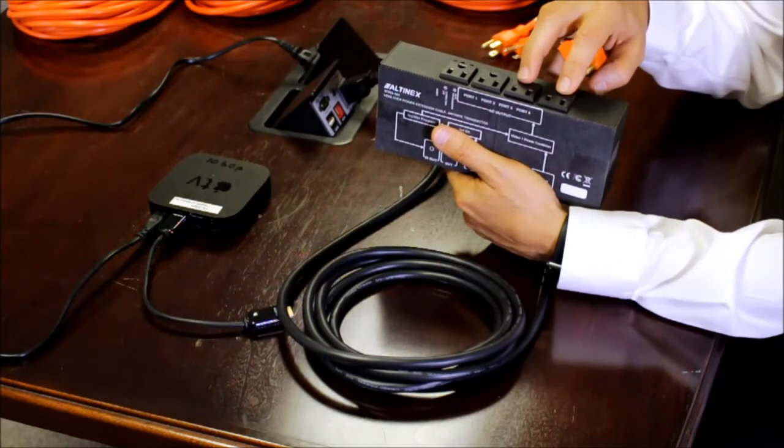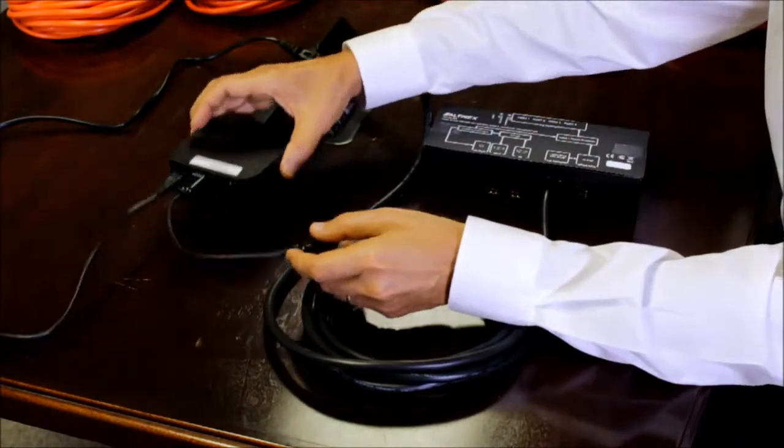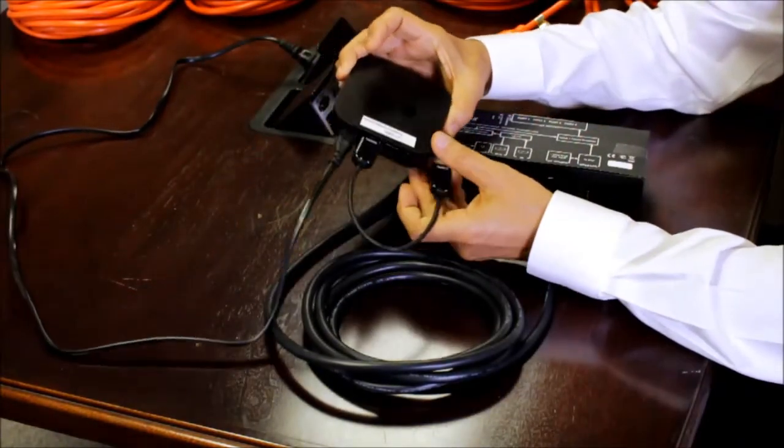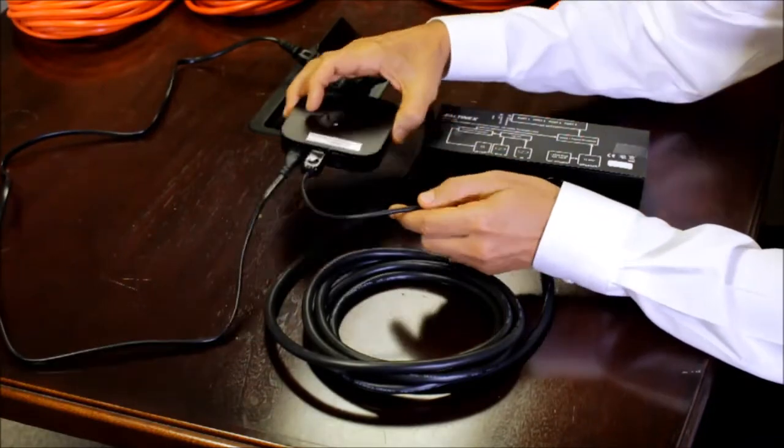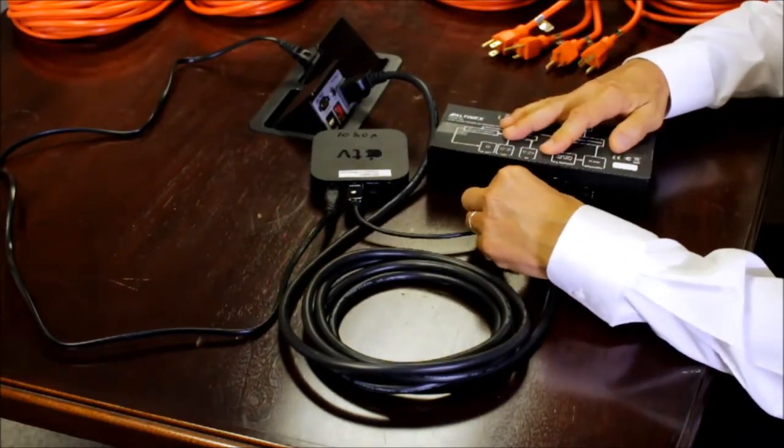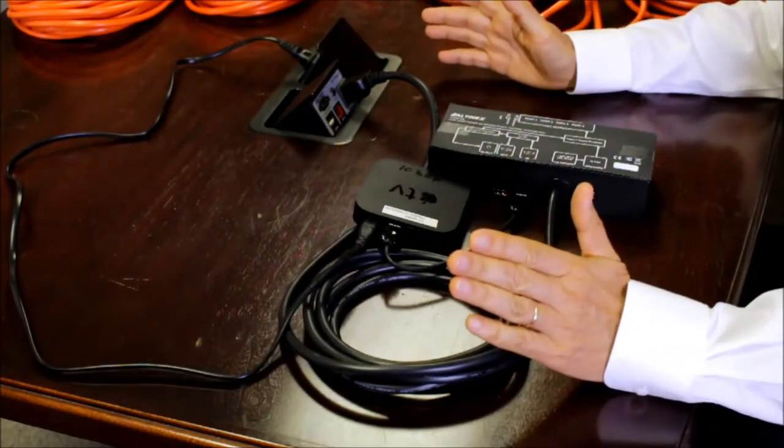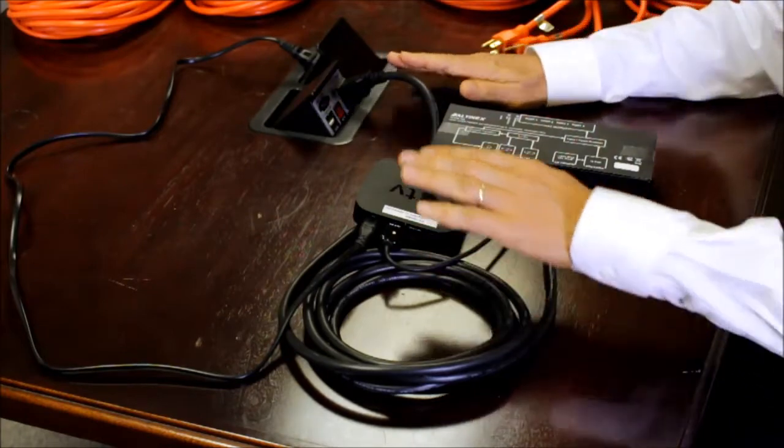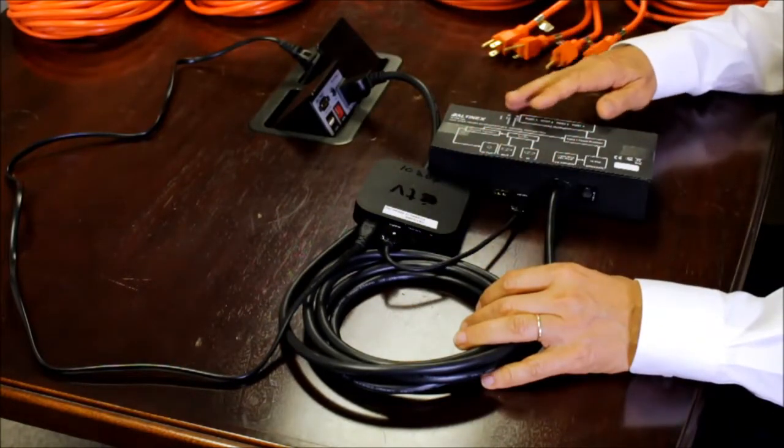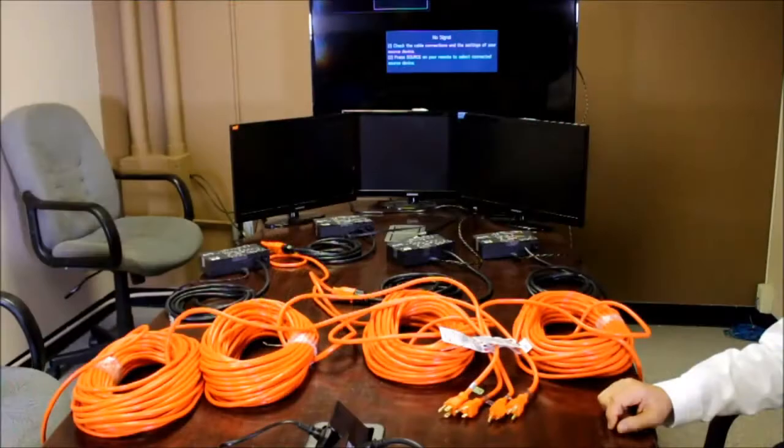I'm going to use Apple TV as my video source. This Apple TV is set up for 1080p and I will connect it to the HDMI input. Now we have basically set up our transmitter. We have the power, we have the source (you can use laptop if you need to), and we have four power ports out that we can use on the extension cable.